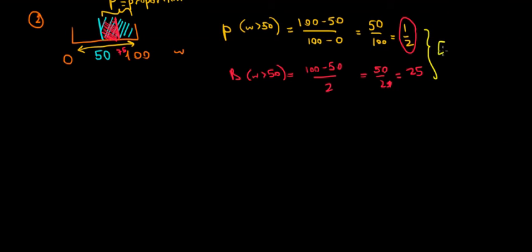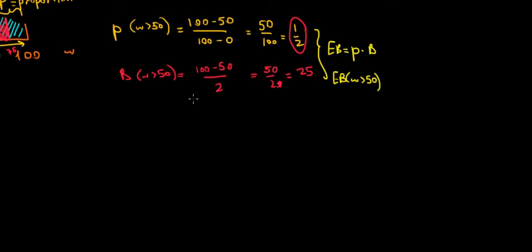So we have to combine these two facts to calculate the expected benefit. And remember, the expected benefit, that's the probability times the benefit. So in our case, the expected benefit of having a wage higher than 50, let me go to the right to have the space, would be equal to 1 over 2 times 25. And that's equal to 12.5.